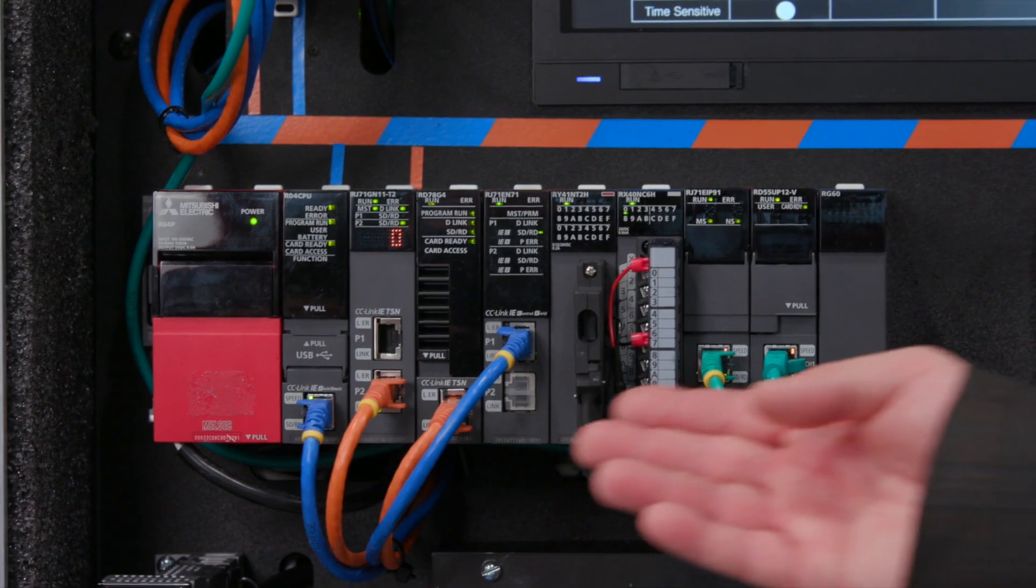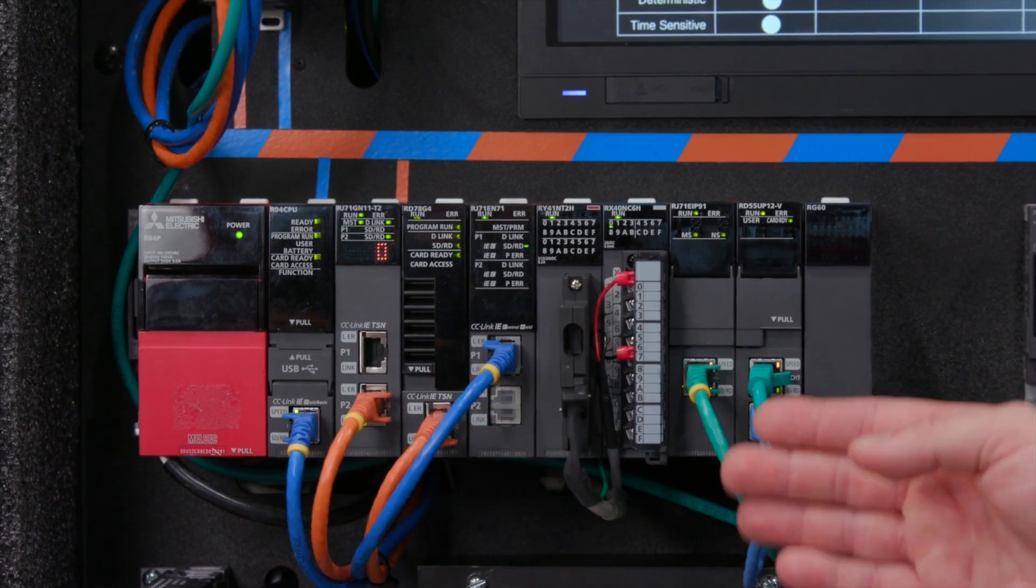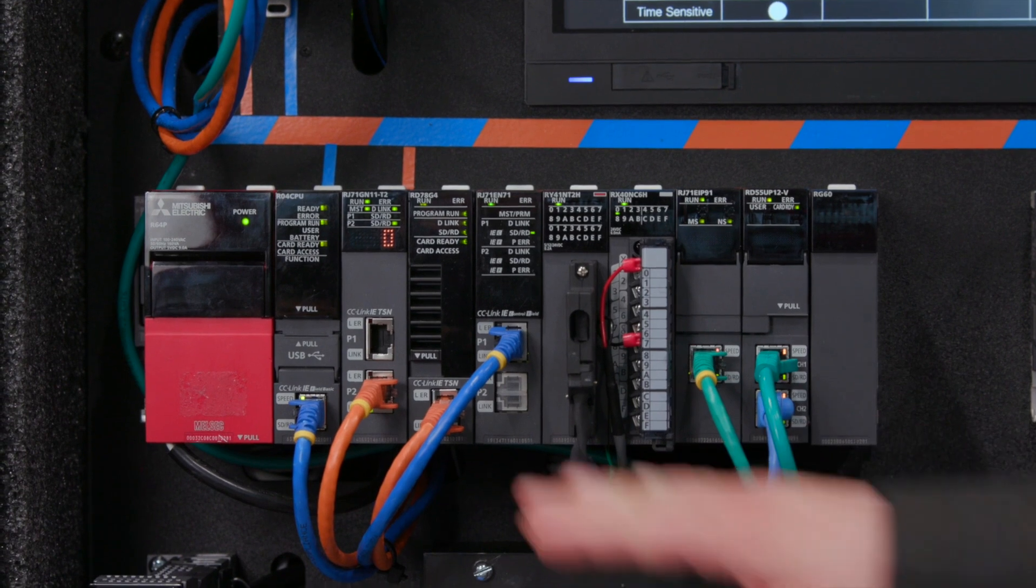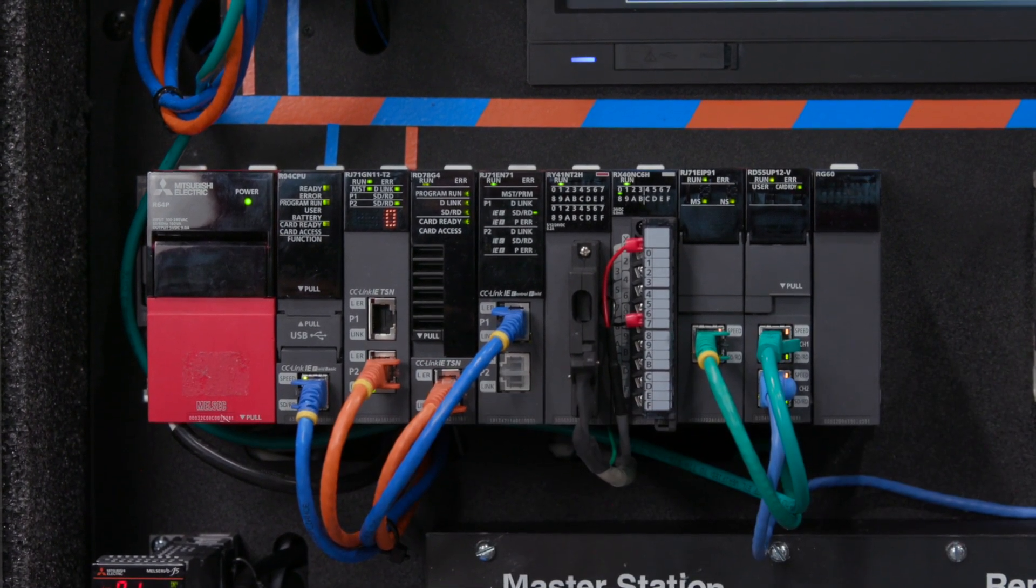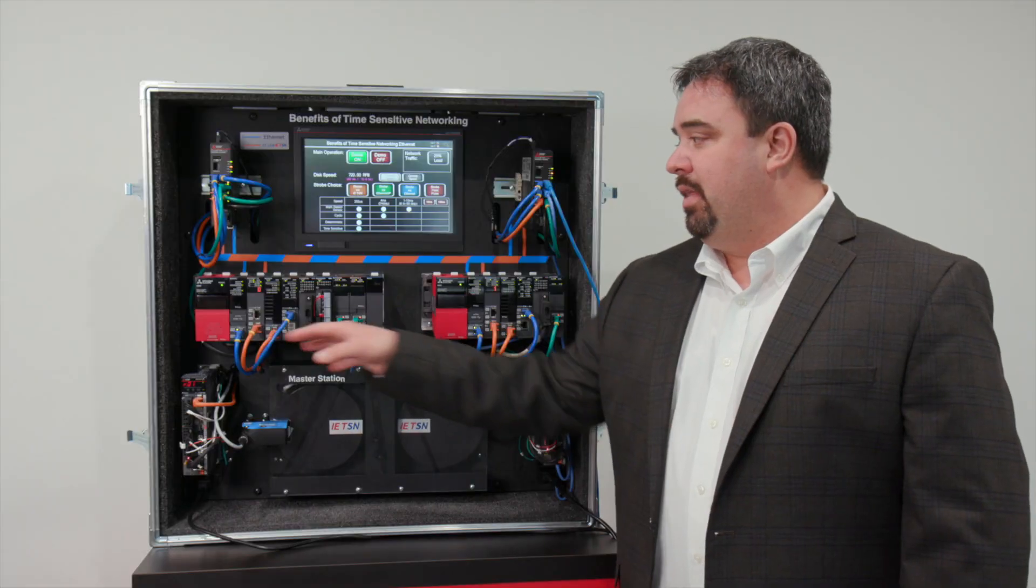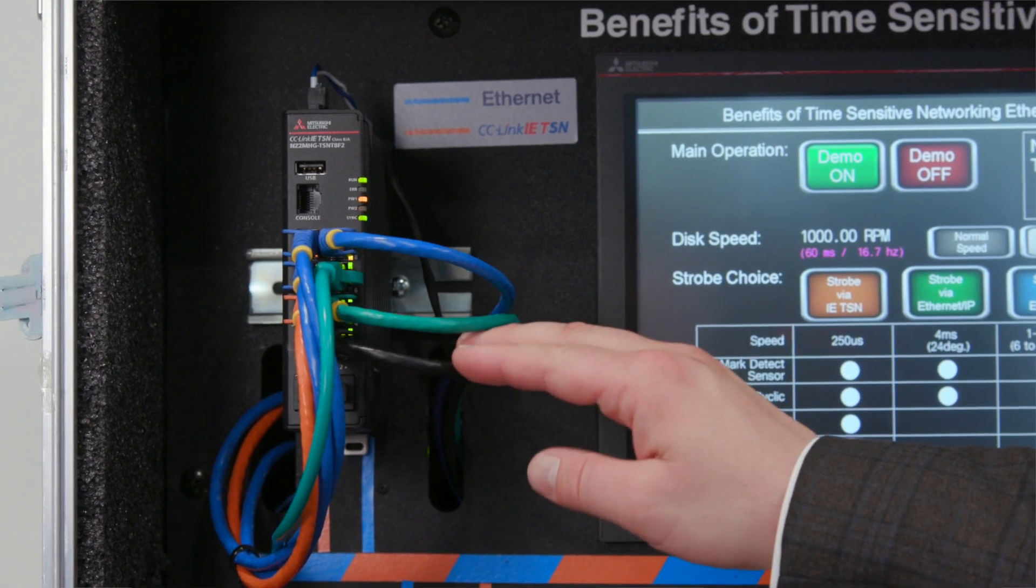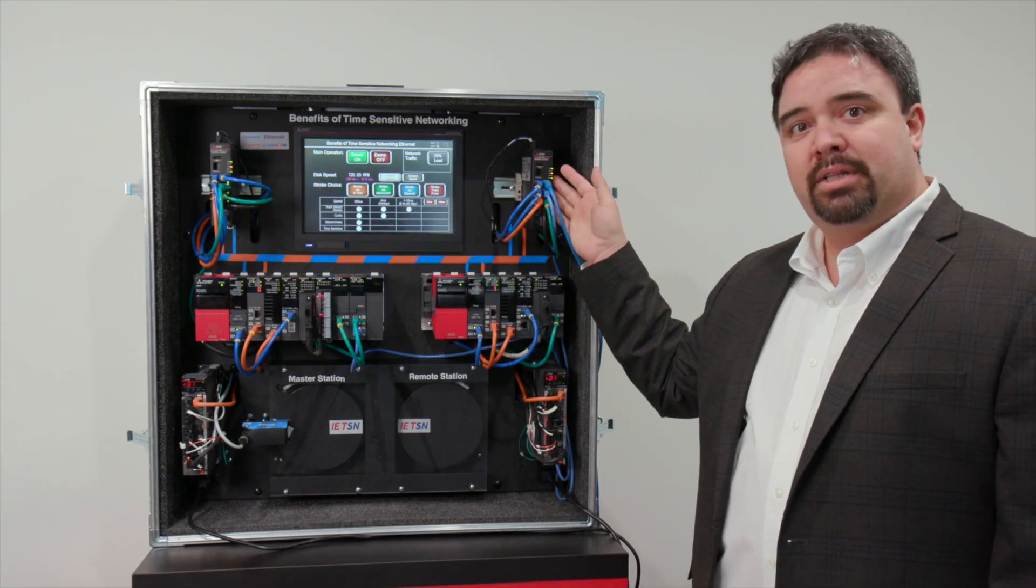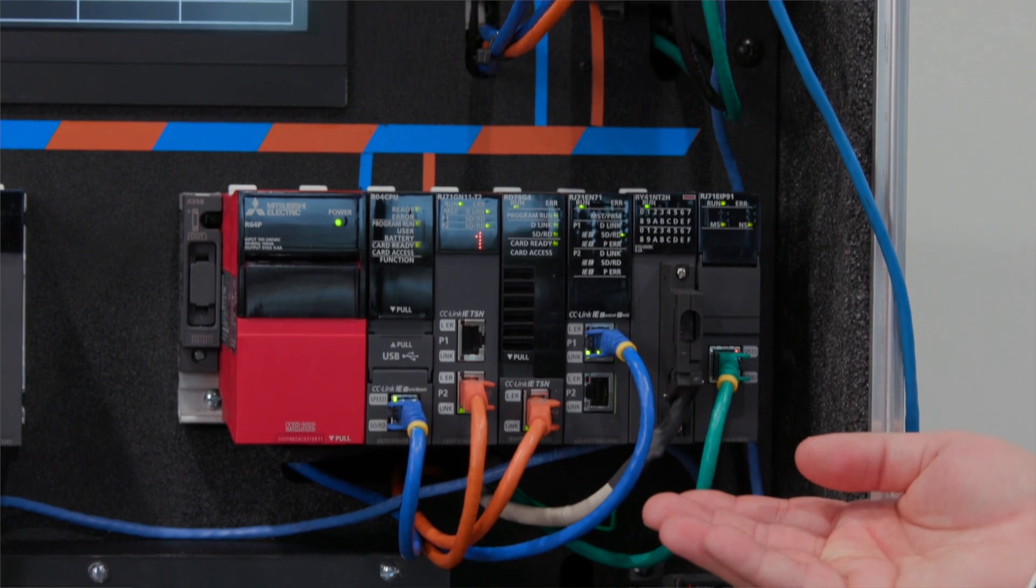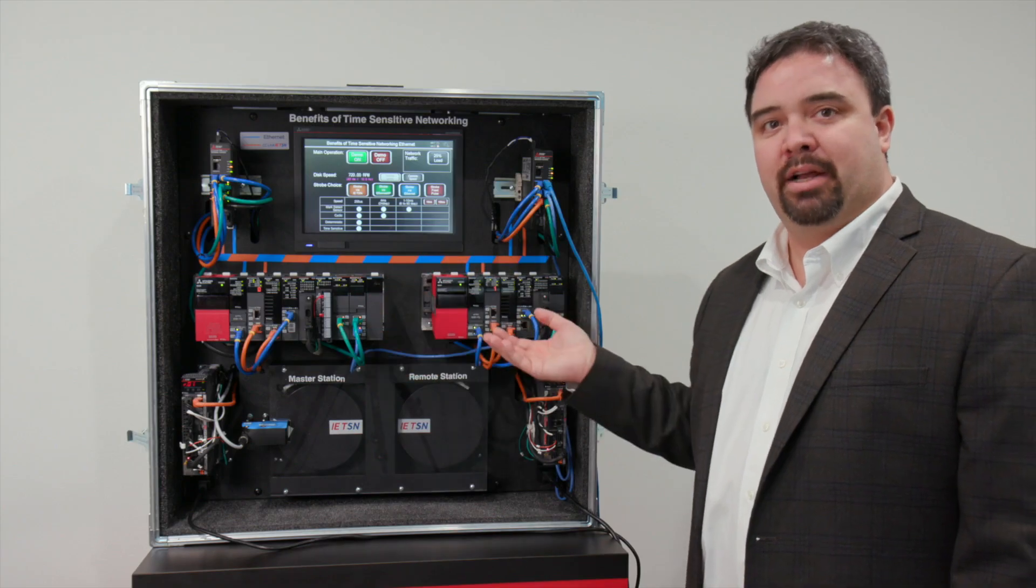So on the left side here we have the master PLC. The master PLC has multiple different networks. We have green for Ethernet IP, we have blue for standard Ethernet and we have orange for CC-Link IETSN. All of that network is passed up to a CC-Link IETSN Ethernet switch. That switch is connected over to a remote station which also has a PLC. So this is simulating two different systems, a master system and a remote system.